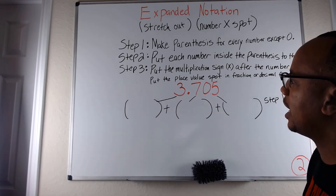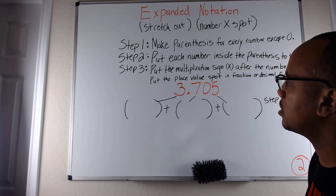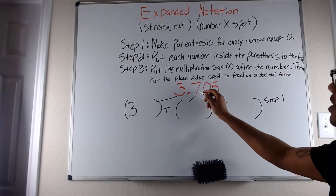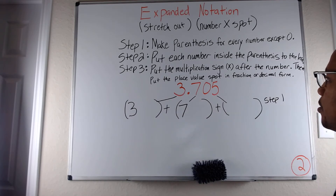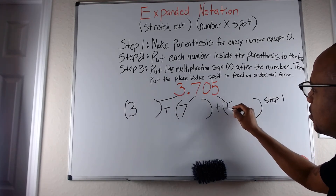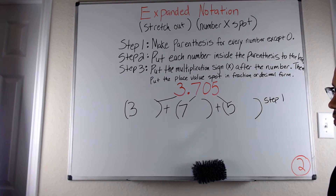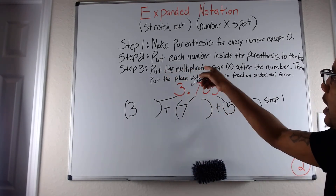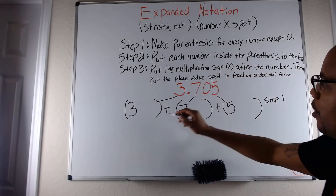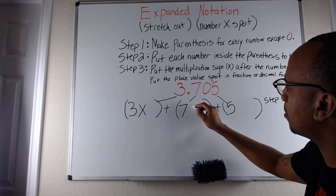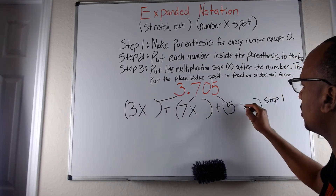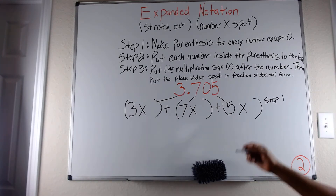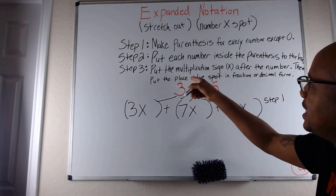Step two — put each number inside the parentheses to the left. I'm going to put the three inside the parentheses to the left, the seven inside to the left, and the five inside to the left. Step three says put the multiplication sign after each number: three times, seven times, five times.